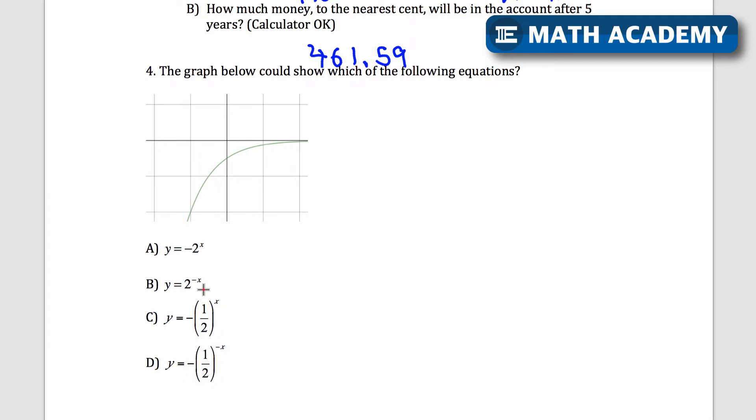So it looks like it's going to be something like 2 to the x or 1 half to the x with a transformation, maybe flipped horizontally or vertically. Let's really quickly look at what y equals 2 to the x and y equals 1 half to the x would look like, and then see what transformation we have here.